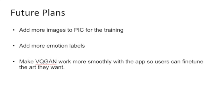For future plans, my goal is to add more images to the Personal Image Classifier for training, and add more emotion labels such as sad, angry, bored, etc., and make VQGAN work more smoothly with the app so users can fine-tune the art that they want.